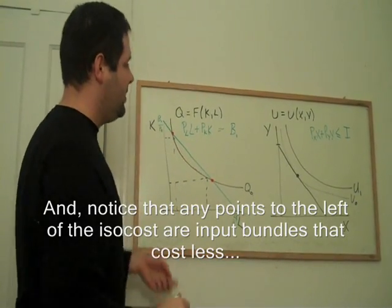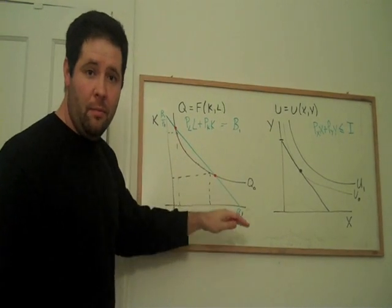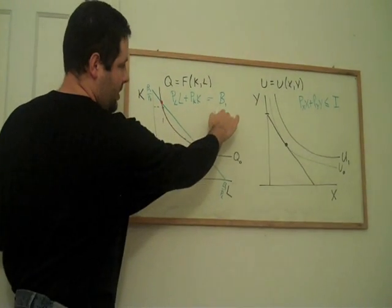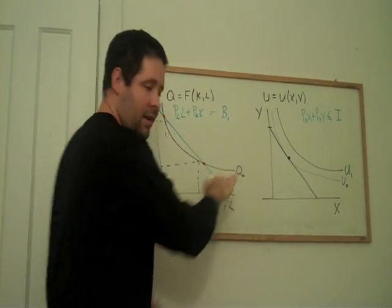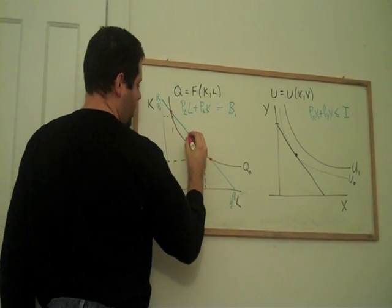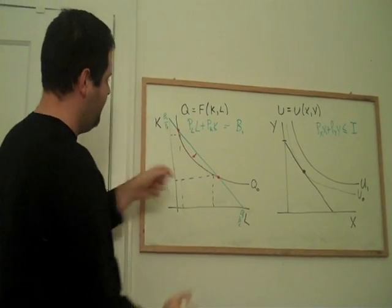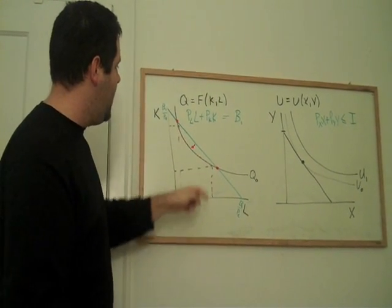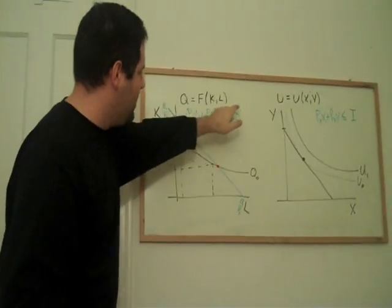And it turns out that what the firm does is, instead of maximizing utility or maximizing quantity for a given budget, they minimize their expenditures, this B, subject to staying on this particular target quantity. So what they do is they move this budget line inward. They don't change the prices. All they do is they try to pick L and K so that they minimize the expenditures.